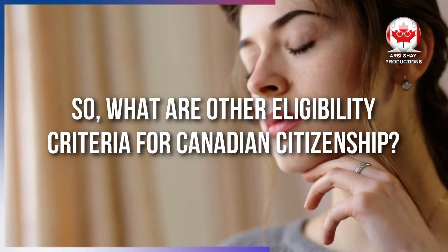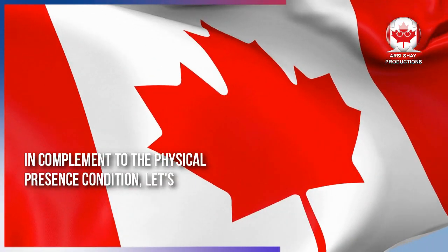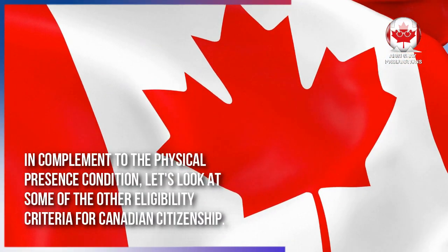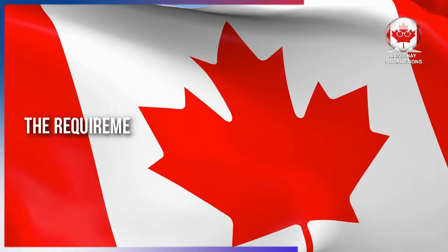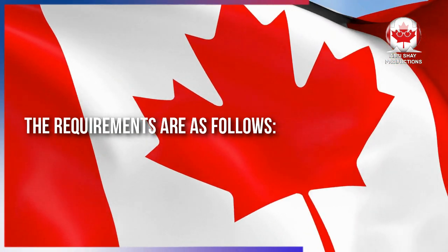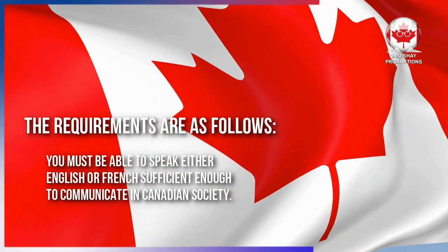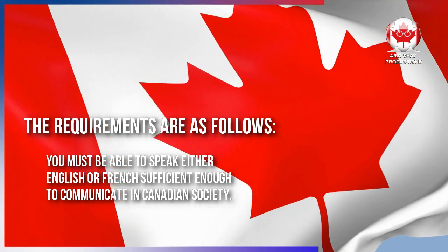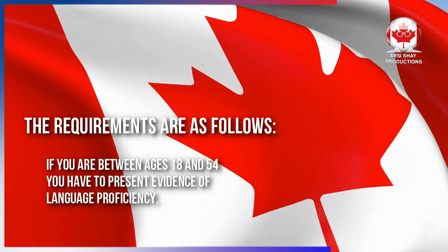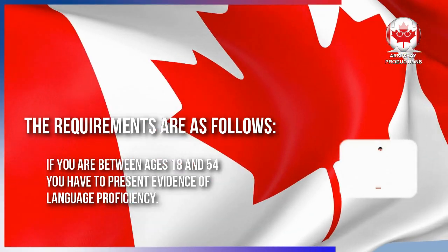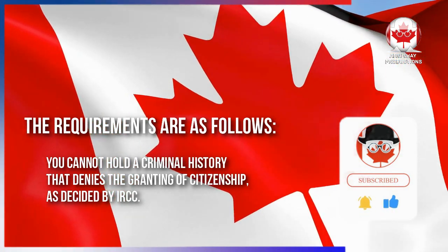So what are the other eligibility criteria for Canadian citizenship? In complement to the physical presence condition, the requirements include: you must be able to speak either English or French sufficiently to communicate in Canadian society. If you are between ages 18 and 54, you must present evidence of language proficiency.